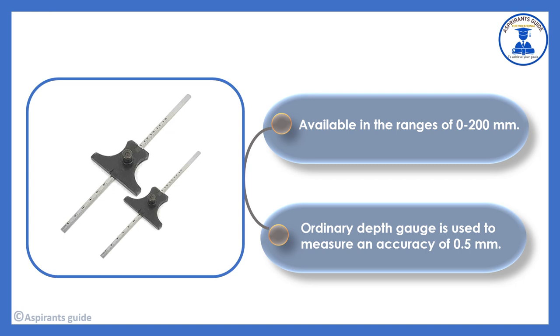The ordinary depth gauge is used to measure with an accuracy of 0.5 mm.